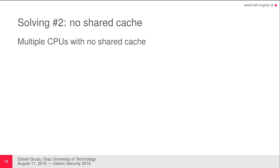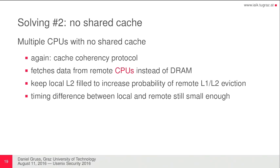Attacking across multiple CPUs was not as complicated as we thought. The cache coherency protocol again saves the day for the attacker, allowing remote cache hits over the coherency protocol. We can apply our technique of keeping the level two cache filled to increase the probability of a remote L1/L2 eviction. We also observed that you can do remote CPU flushes, which is nice for Flush and Reload, though it adds noise and requires more repetitions. But you can still perform a cross-CPU Prime and Probe attack.